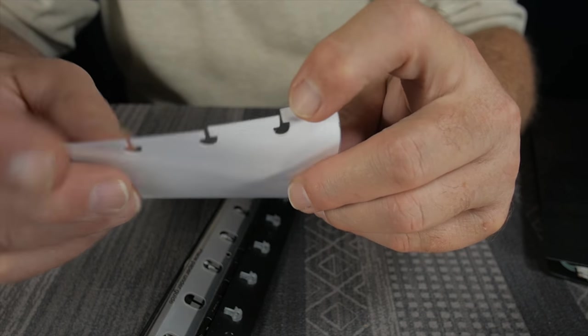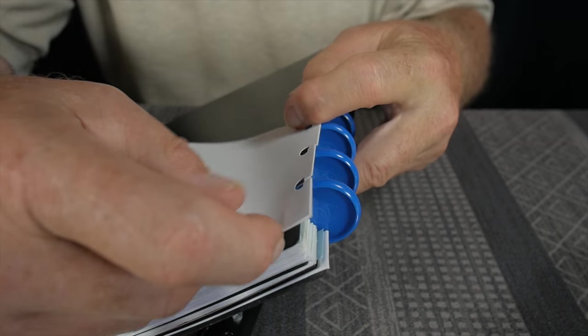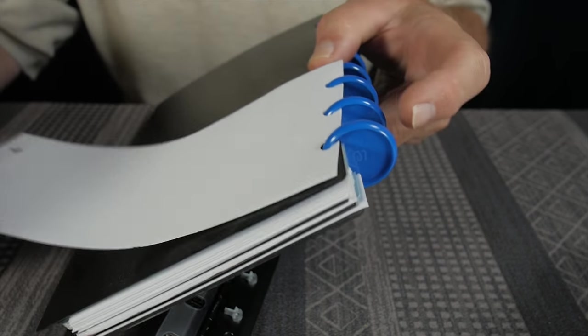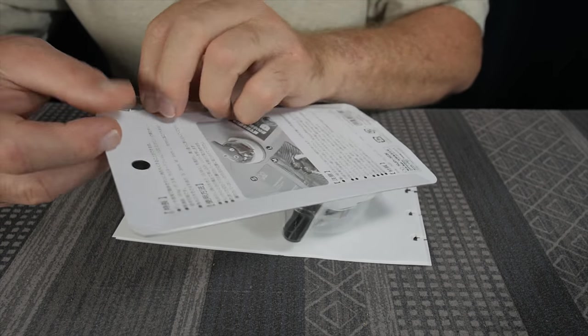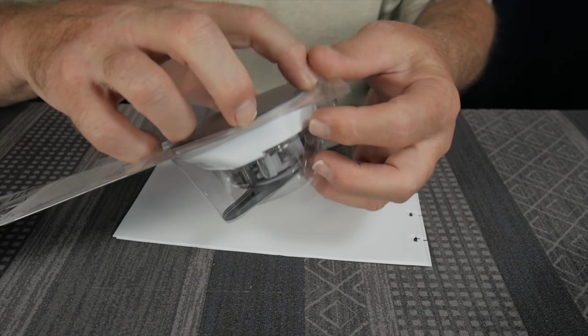So you have these holes, half round holes with little slots, and they should interlock into the disc binding system just fine like this. I think that's going to be a nice system, and they stay secure. So the other thing you might want to do to these pages before you bind them up is corner punch them.